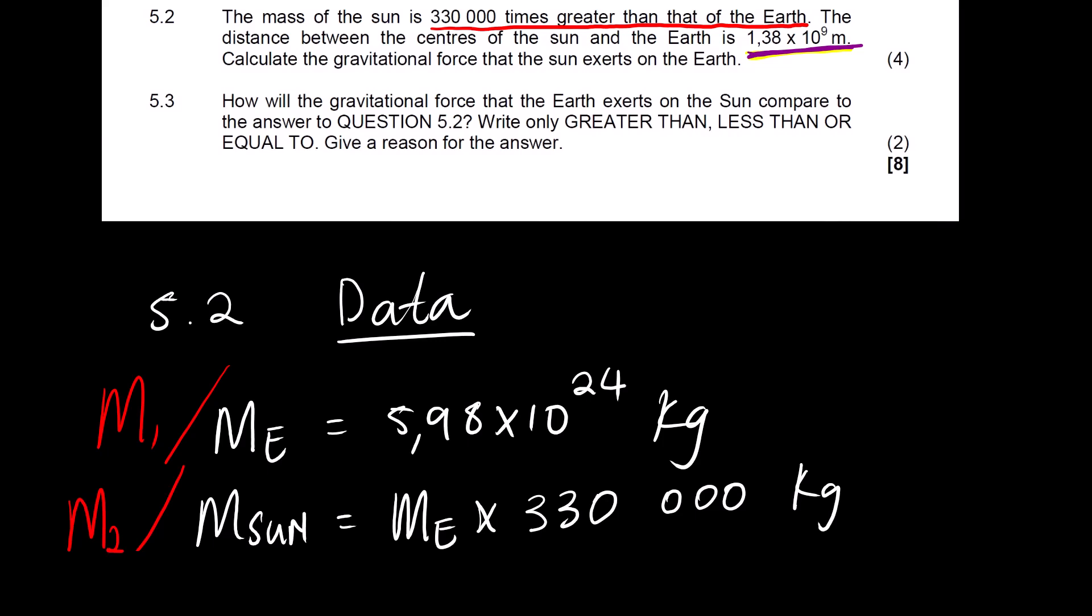We can quickly calculate the mass of the Sun, or we can simply directly substitute into the equation. And then we are given the value of R, which is the radius. It's equal to 1.38. The radius between the two, the radius from the centers of the two objects. So we can go ahead and substitute.